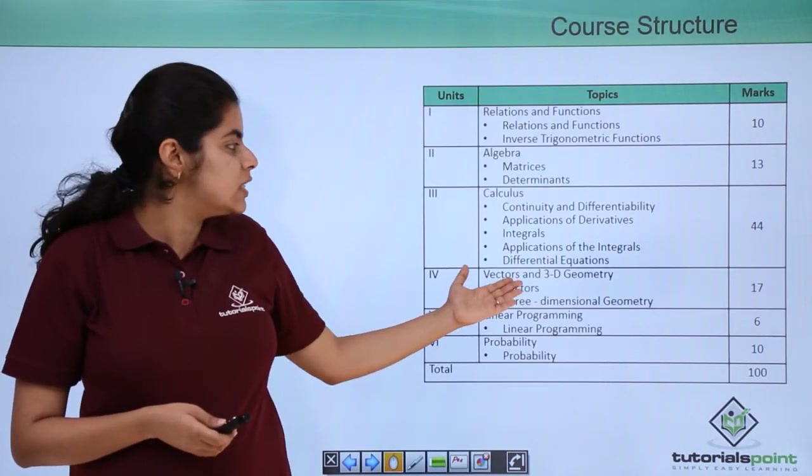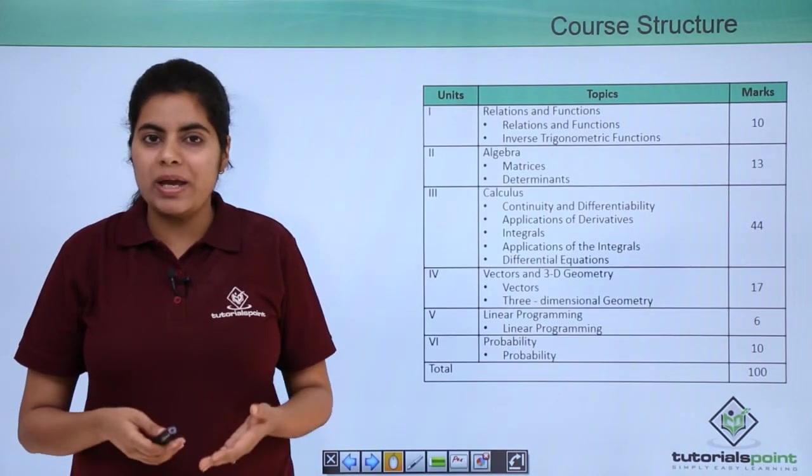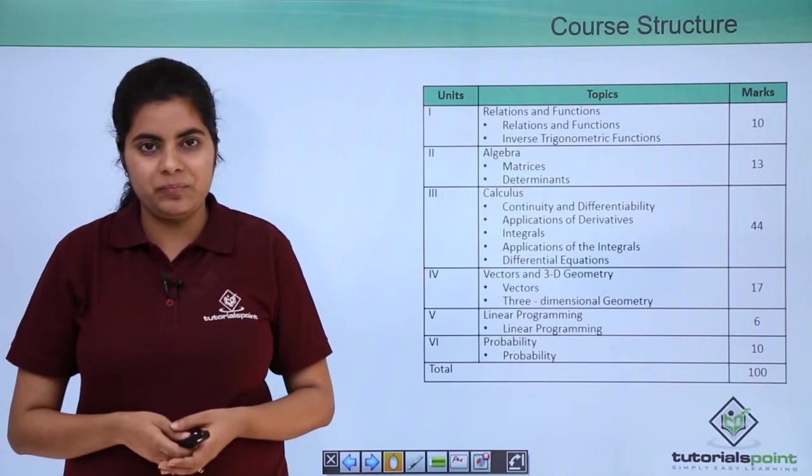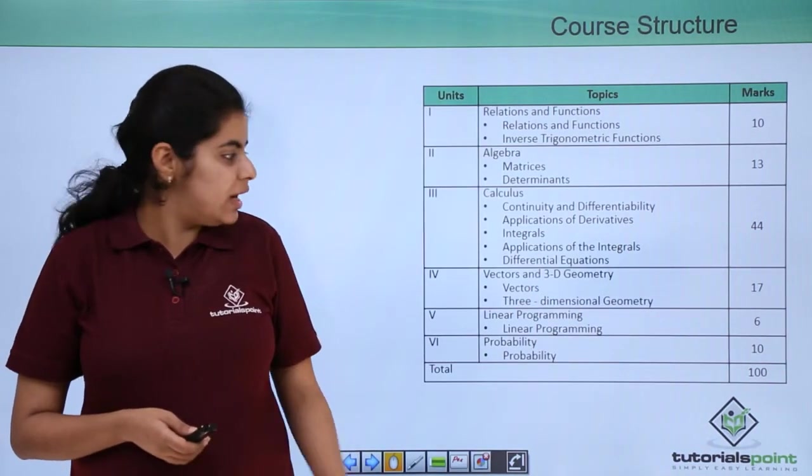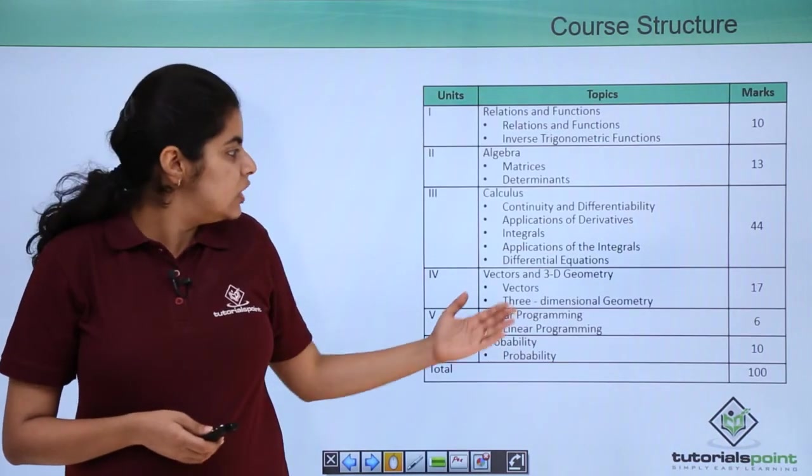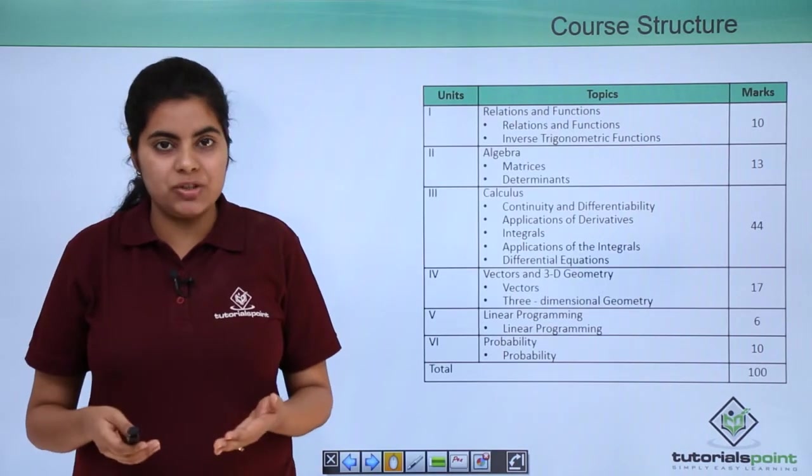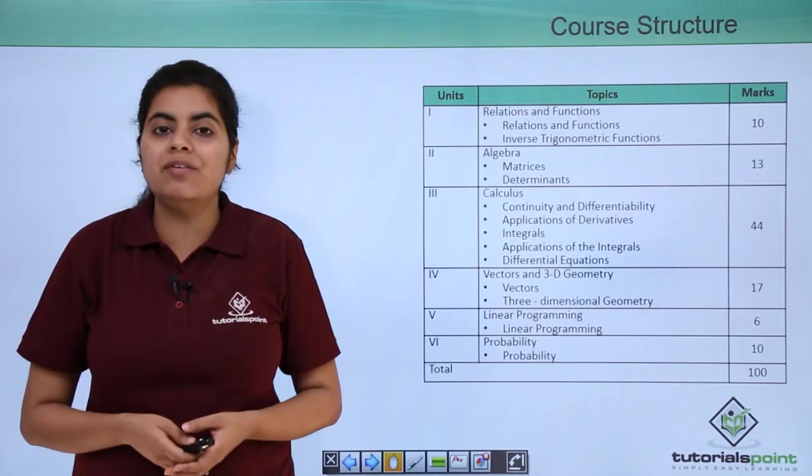Next we come to the importance of the unit number four which is vectors and 3D. So vectors and 3D means vectors and three-dimensional geometry. It includes again two chapters. The first one is named as vectors and the second one is named as three-dimensional geometry. And both these chapters together constitute an important total of 17 marks.